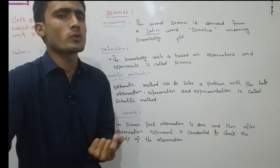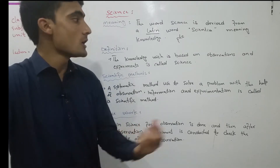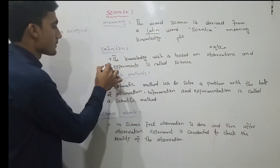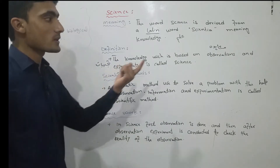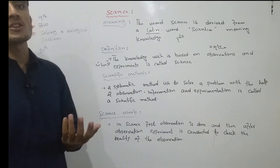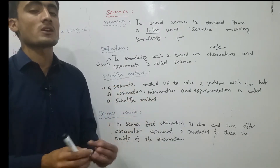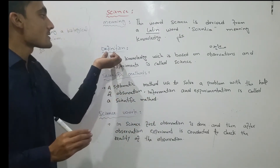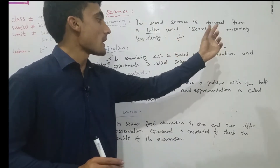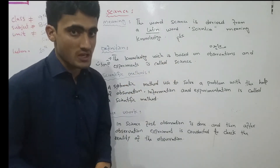How do we define science? The knowledge which is based on observations and experiments is called science. In Urdu or Pashto: science is that knowledge which is based on observations — 'mushahedah' — and experiments — 'tajrubat.' Knowledge gained through observation and experiment is what we call science.